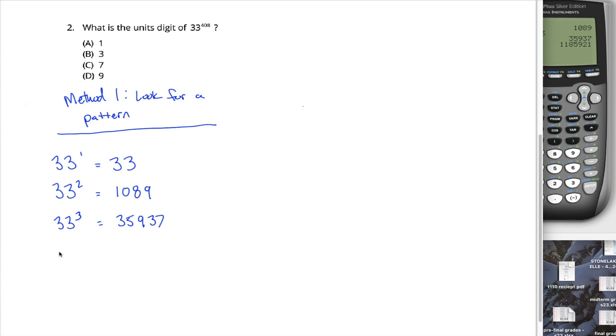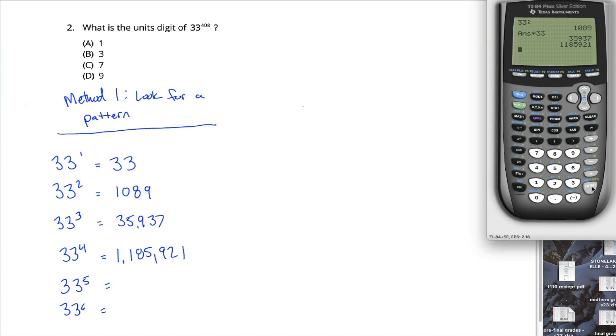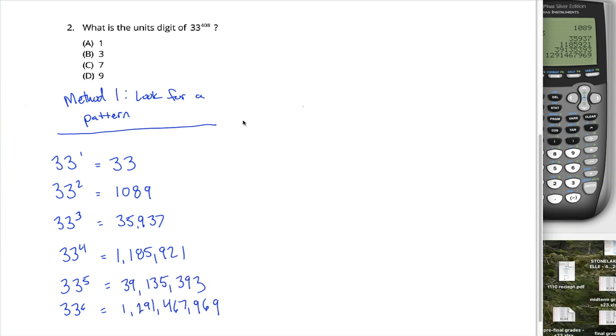That tells me that 33 to the fourth power is equal to 1,185,921. Might not seem like we're getting anywhere, but we're actually pretty close. If we figure out 33 to the fifth and 33 to the sixth by hitting enter a couple more times, what you see are these huge numbers that end in three and nine respectively. And if you recall, the question wasn't asking about these values, but instead their unit digit, you might come back and look at the unit digit for each of these different products.